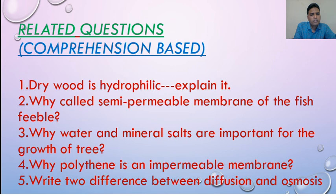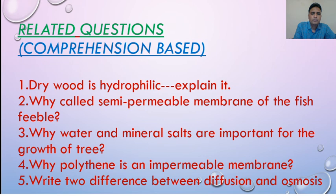You have to explain why water and mineral salts are important for the growth of a tree. Number four: why is polythene an impermeable membrane? Impermeable means the membrane through which both solute and solvent cannot pass — polythene does not allow water or any solute to pass through it. Number five: write two differences between diffusion and osmosis. You have to explain diffusion and osmosis.